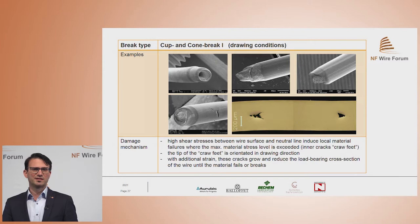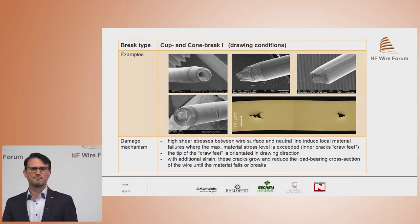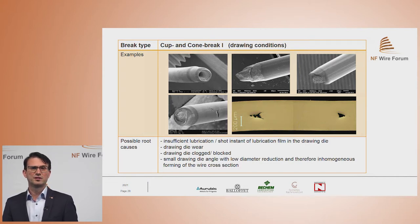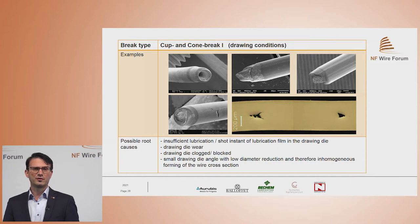The damage mechanism is high shear stress between the wire surface and the neutral line, inducing local material failures where the maximum material stress level is exceeded. The inner cracks — the so-called chevron cracks — occur, with their tips oriented in the drawing direction. With additional strain, these cracks grow and reduce the load-bearing cross section of the wire until the wire breaks. Possible root causes are insufficient lubrication or a short instant without lubrication film in the drawing die — even a millisecond without lubrication can contribute to these inner cracks, which occur in dies much before the break.